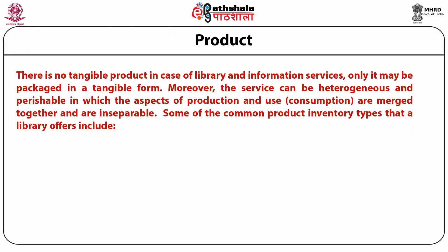In case of marketing of services — that is, not physical products but services — there are three other unique P's in addition to the four P's, and these three P's are people, process and physical evidence. So together the seven P's of service marketing include product, promotion, price, place, people, process and physical evidence. Service can be heterogeneous and perishable, in which the aspects of production and use or consumption are merged together and are inseparable. Access to library services to a user is one such example of this kind.